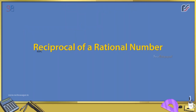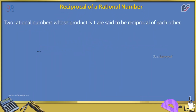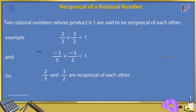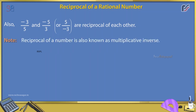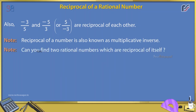Reciprocal of a Rational Number: Two rational numbers whose product is 1 are said to be reciprocals of each other. For example, 2/3 × 3/2 = 1 and -3/5 × -5/3 = 1. So 2/3 and 3/2 are reciprocals of each other, and -3/5 and -5/3 are reciprocals of each other. Note: the reciprocal of a number is also known as its multiplicative inverse. Can you find the reciprocal of 0?